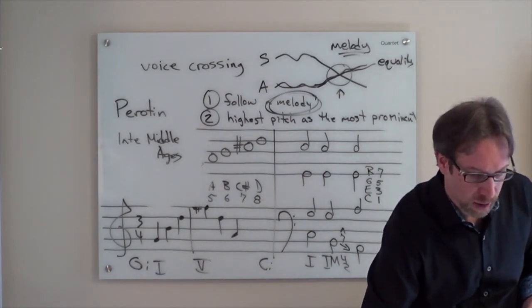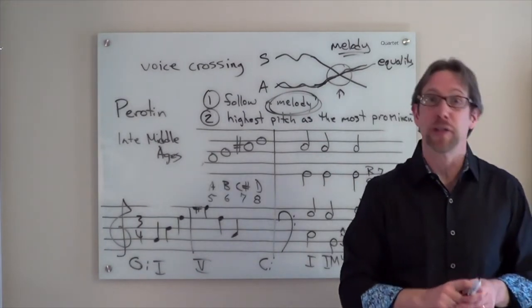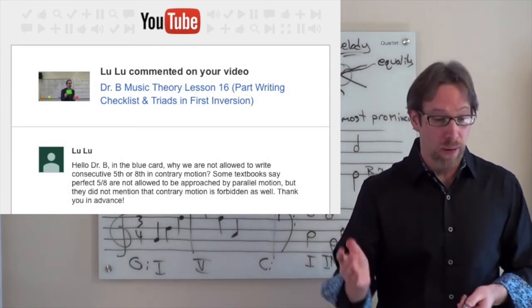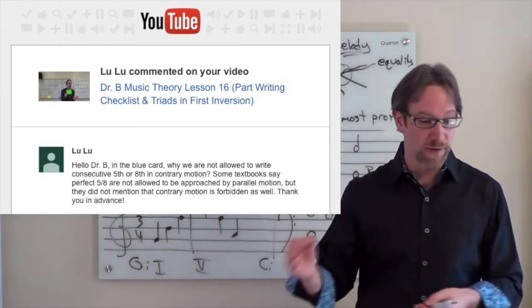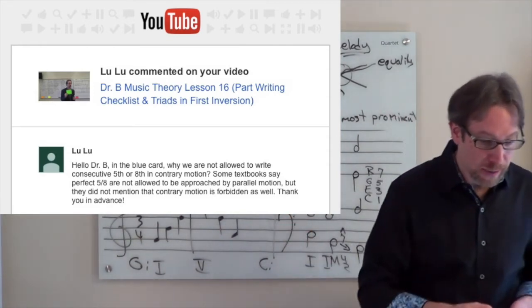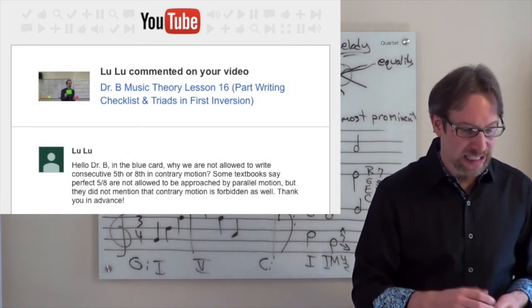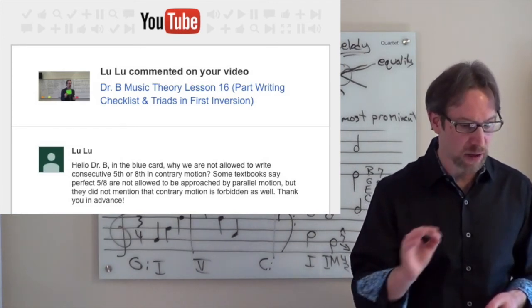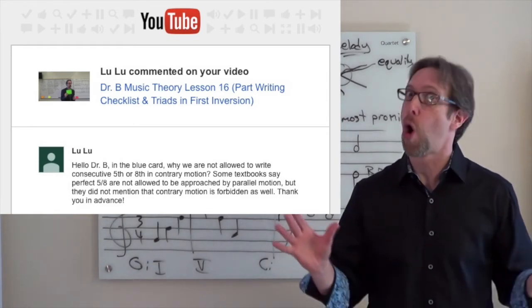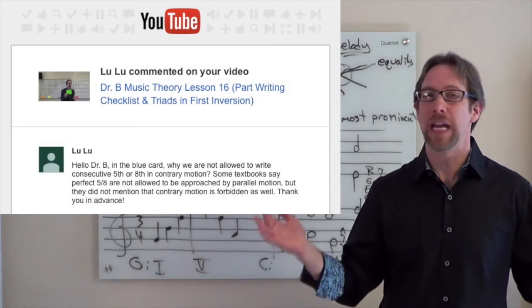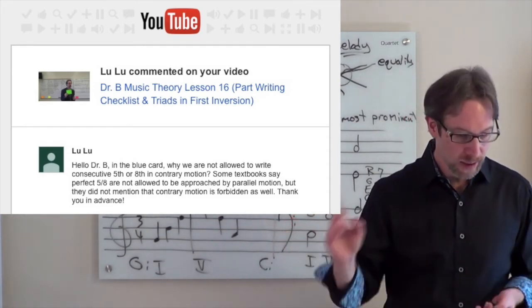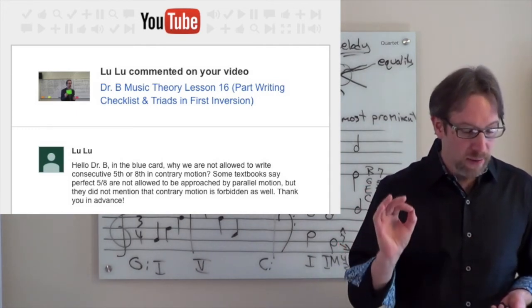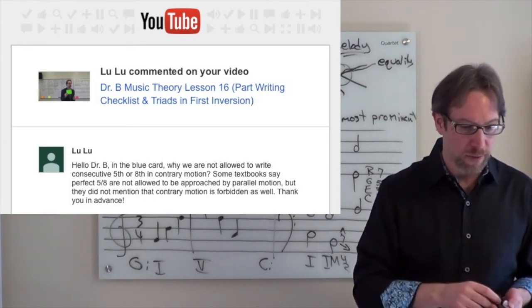We're going to talk about another question. This will be our last question. This is from Lulu. She commented on lesson 16, which was the part writing checklist and dealt with triads and first inversion. And Lulu wrote, hello Dr. B, in the blue card, why are we not allowed to write consecutive fifths or octaves in contrary motion? Some textbooks say that perfect fifths and octaves are not allowed. And by some, really all textbooks. There's no textbook that's saying, yes, parallel fifths and octaves are okay.